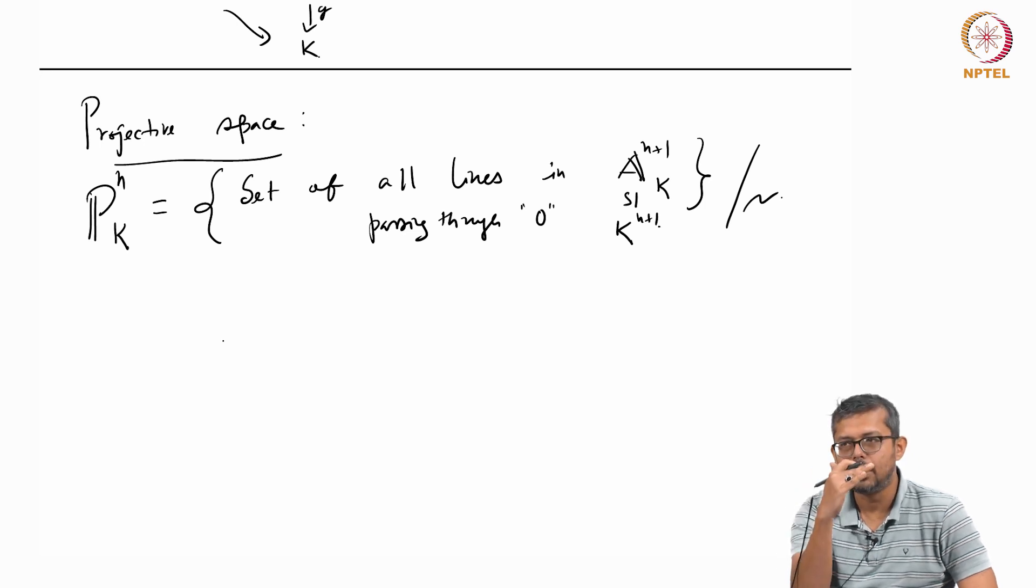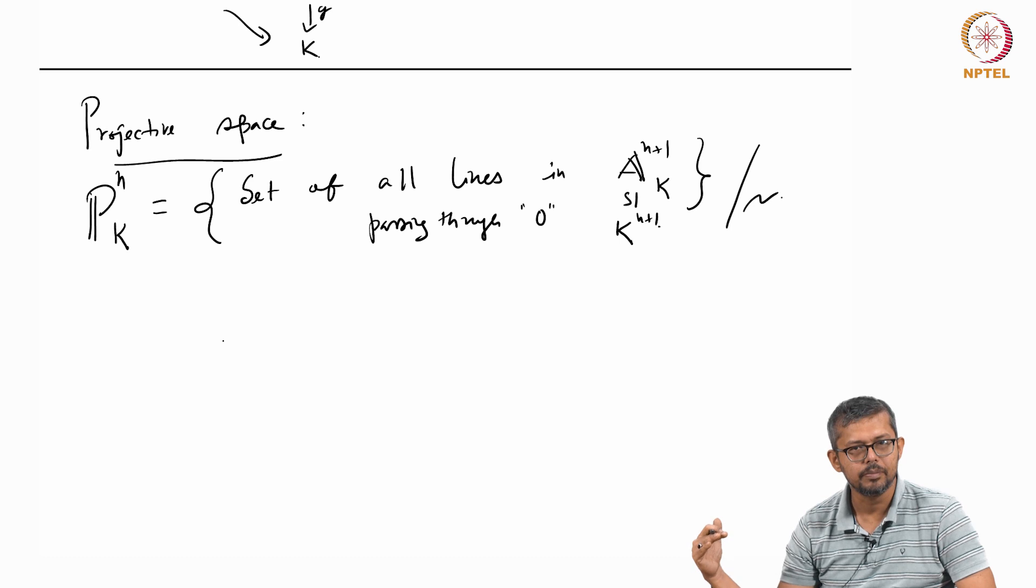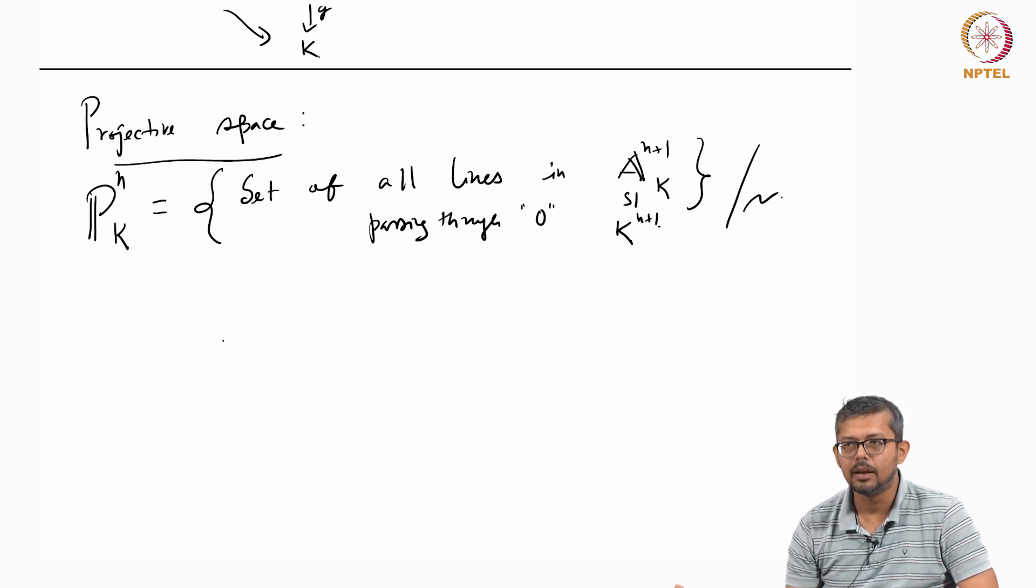For example, if I take a line that does not pass through origin, that also I can think as A^1_K, as an affine variety. But that is not the line passing through 0, so it does not contain 0. But you can translate it to a line passing through 0.